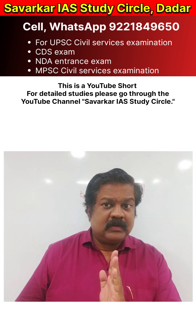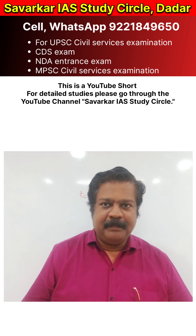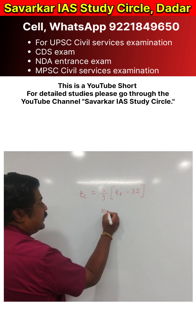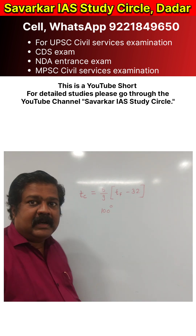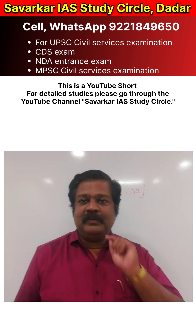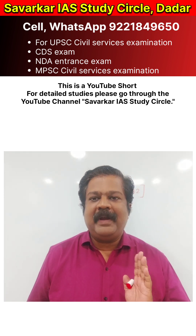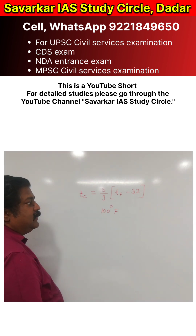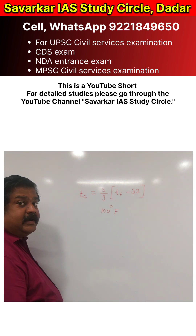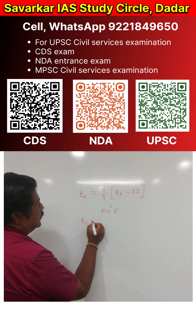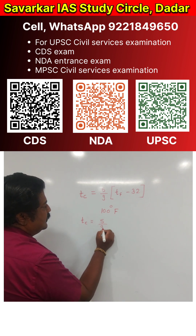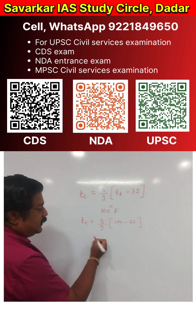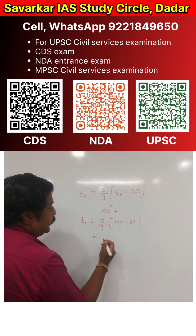Now let us go further with a few examples. Let us consider that when a person says he is having a temperature of 100 degrees using a clinical thermometer, it is actually 100 degree Fahrenheit. So I have to convert Fahrenheit into degree Celsius: TC = 5 by 9 into 100 minus 32.